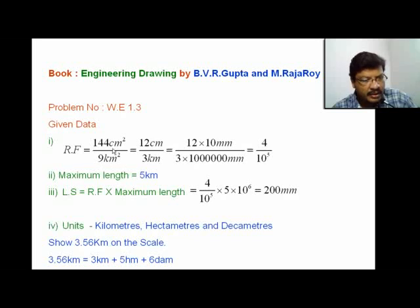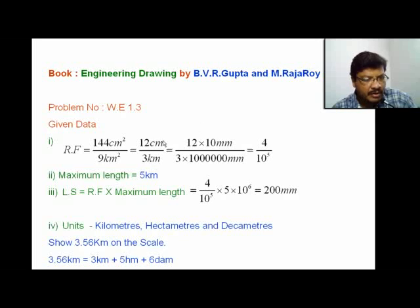To calculate the RF value, note that RF is always calculated based on distances, not areas. So here you calculate the length from the area — take the square root of both numerator and denominator. That gives you 12 cm / 3 km. Now convert cm to mm and km to mm, and you will get RF = 4 / 10⁵.